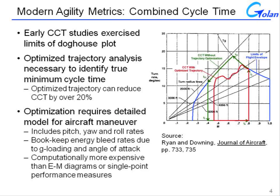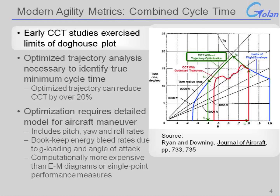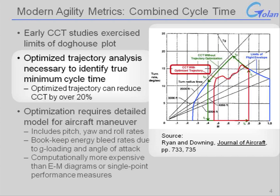The first individuals to utilize something like a combat cycle time basically flew the limits of the dog plot — they assumed the airplane would go to its max load factor immediately, reach the true corner speed where you get the maximum instantaneous turn rate, make the turn, and then unload back to 1G and accelerate back up. However, that is not necessarily the optimum approach if your objective is to recover energy at the end. To find the true optimum, you need to perform an optimized trajectory analysis, which is more sophisticated.